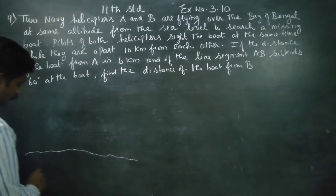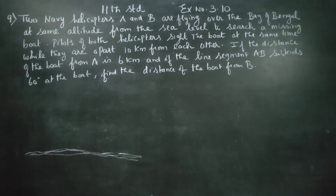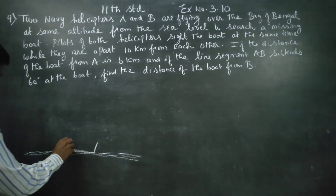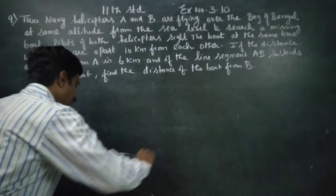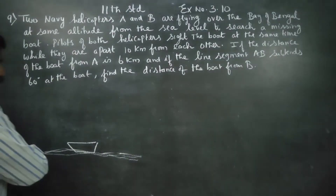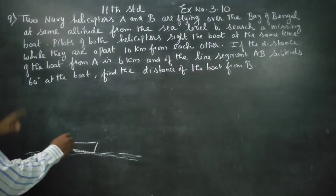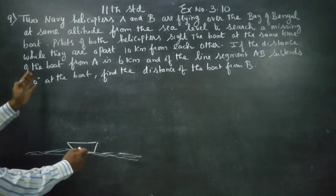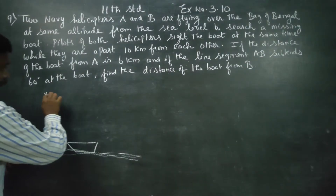Here is the Bay of Bengal sea with a missing boat. This is ground level. Two helicopters are at the same altitude — for example, 1000 feet. Both helicopters are flying at the same level over Bay of Bengal, searching for the missing boat.